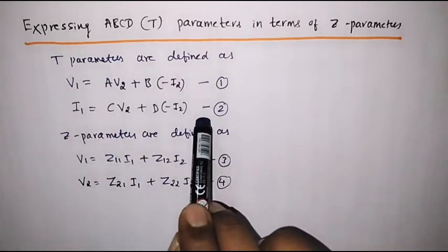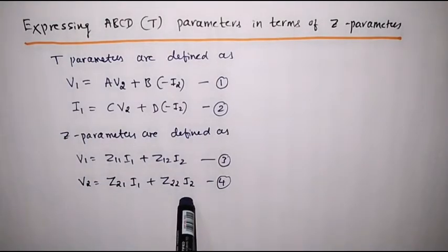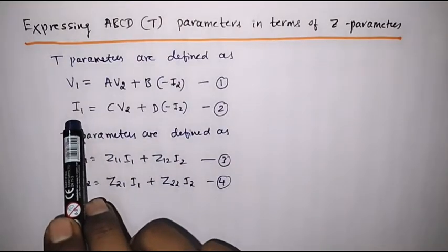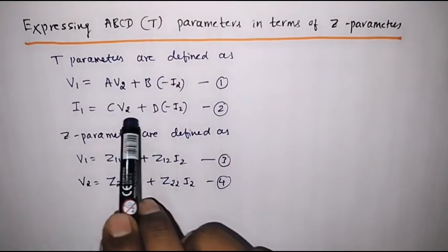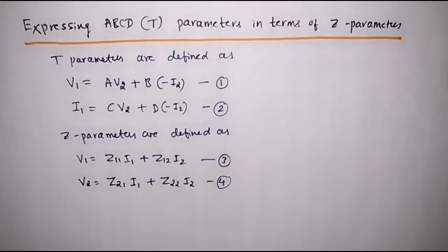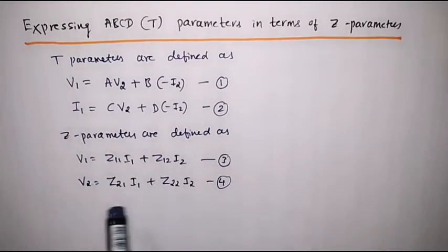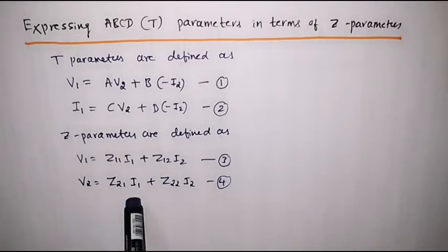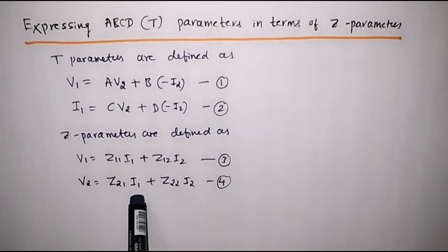Observe equation number two and equation number four. Equation number two is I1 is equal to C·V2 plus D·I2. Here we have a V2 term, an I2 term, and also an I1 term. Now we will try to represent equation number four in terms of I1.